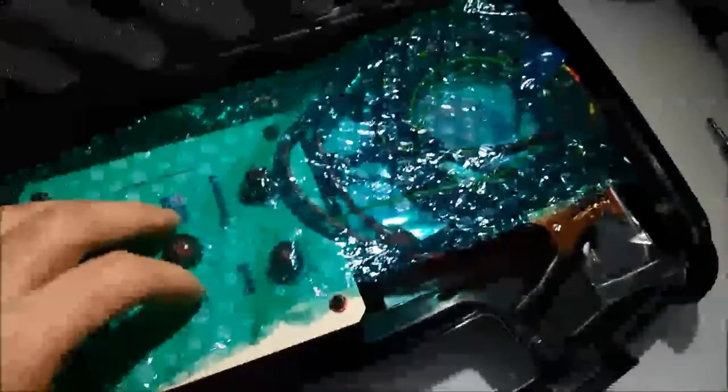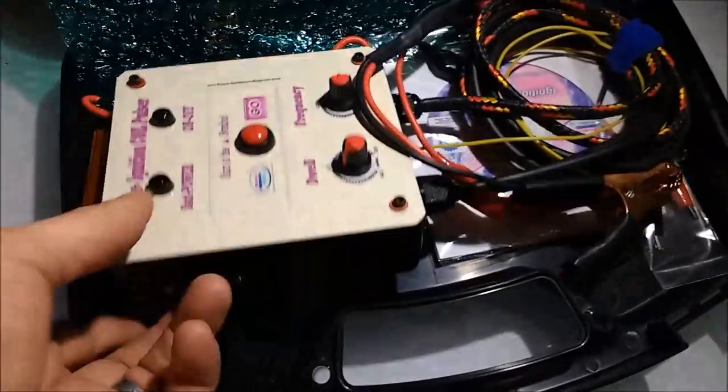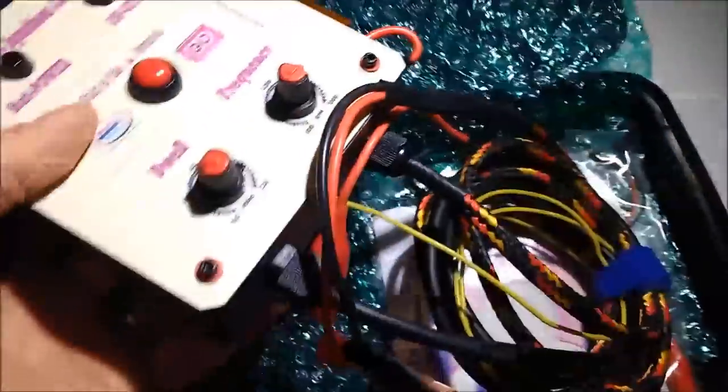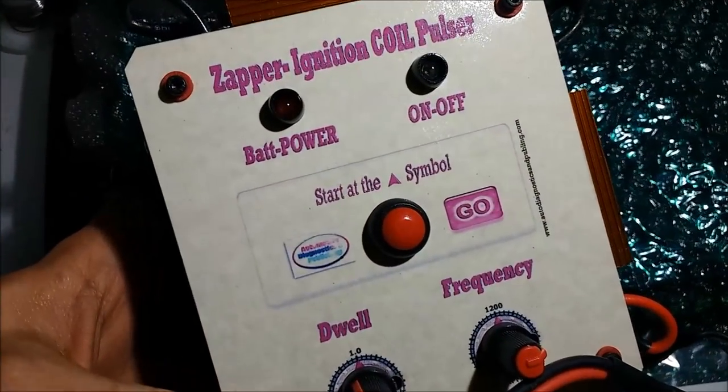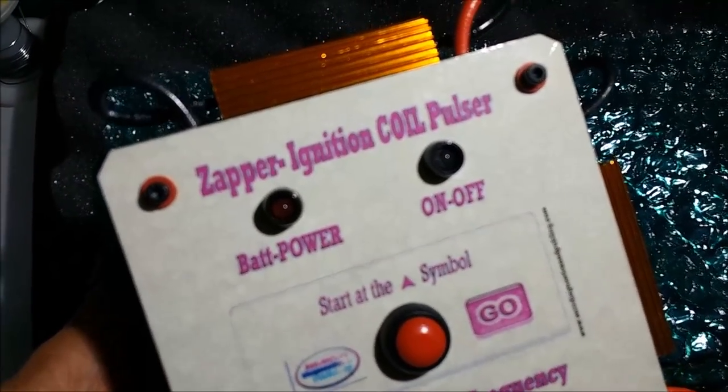This has been a video showing you how to test coil-on-plug systems with internal igniters using the Zapper Industrial Ignition Coil Tester. Thank you for being with us and thank you for watching.